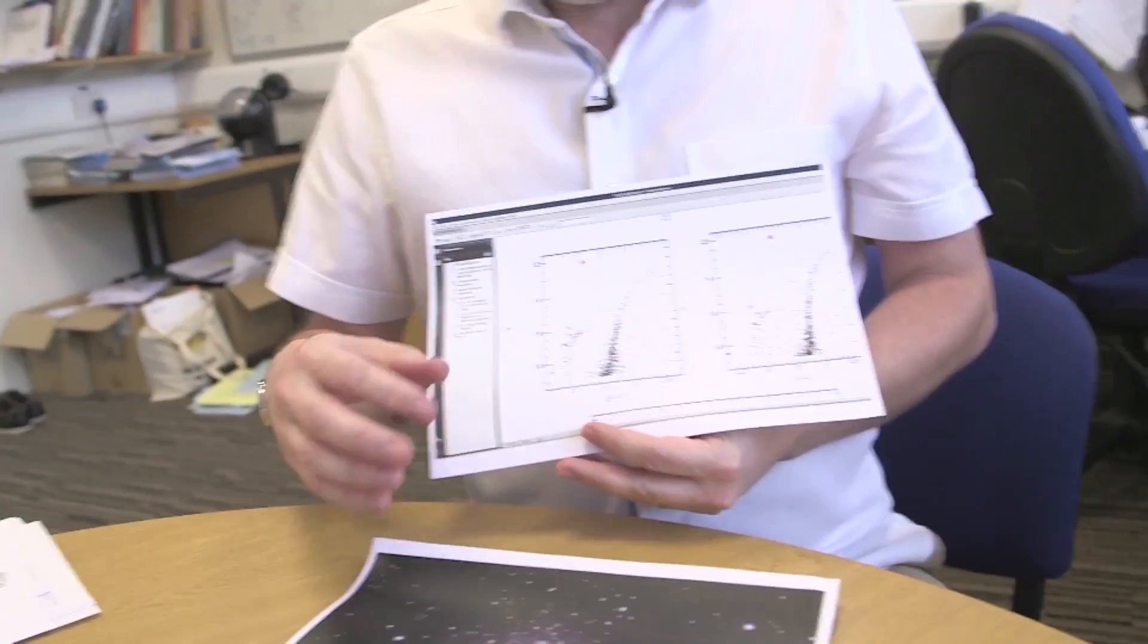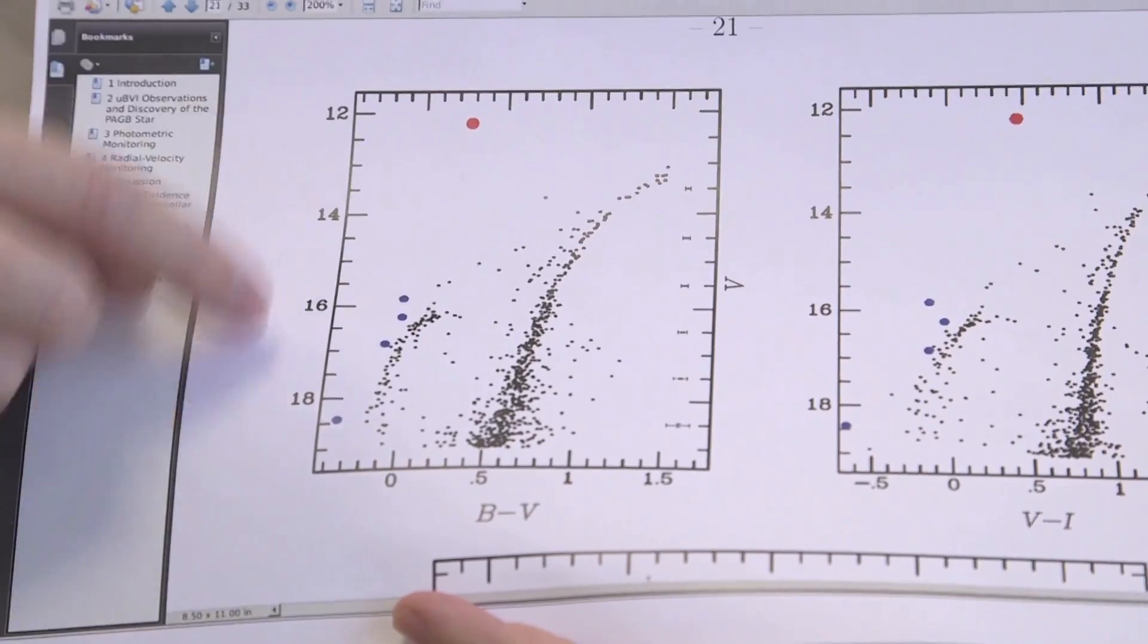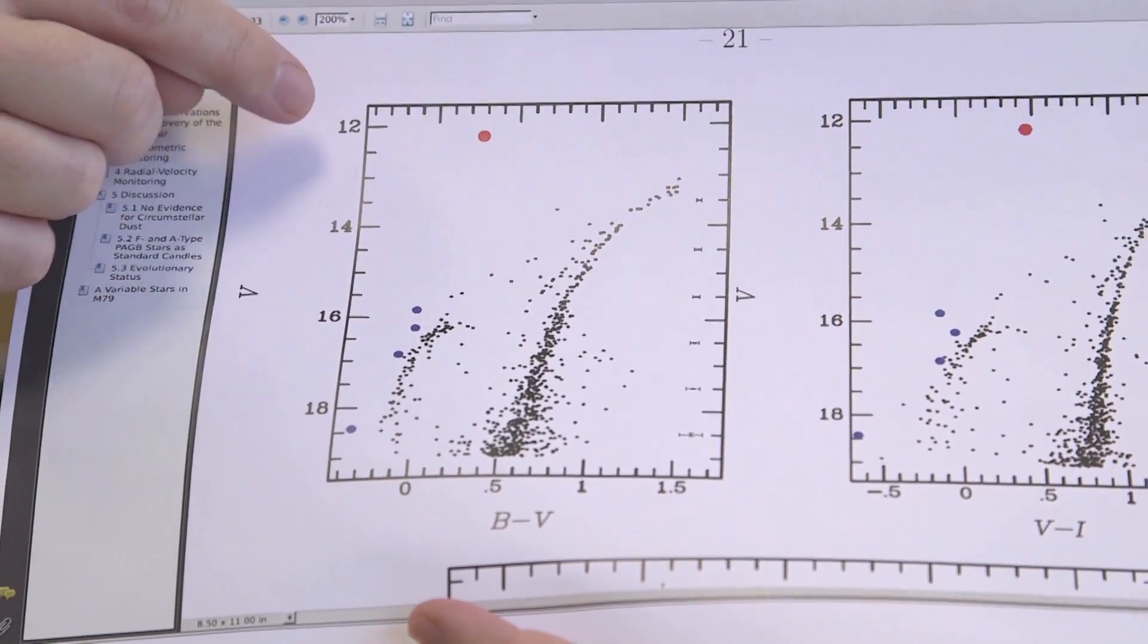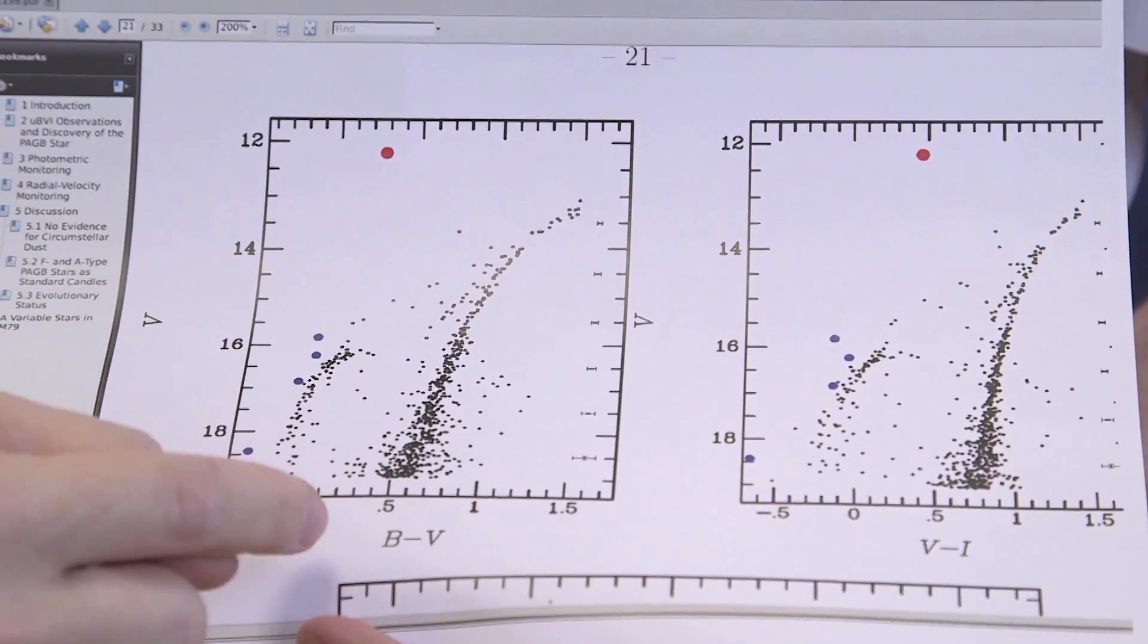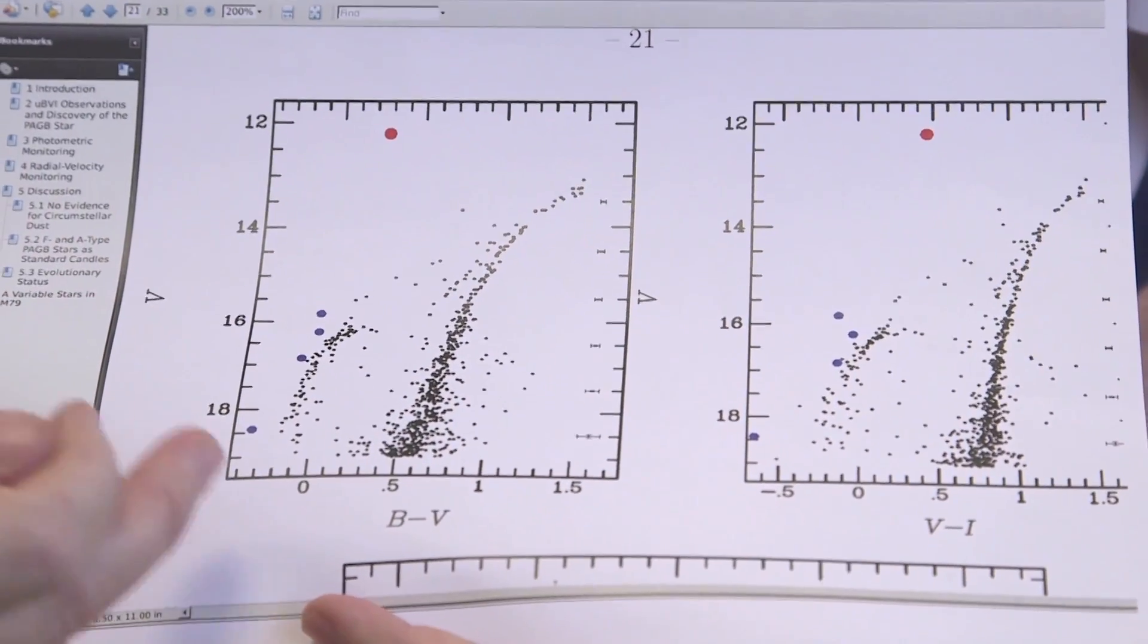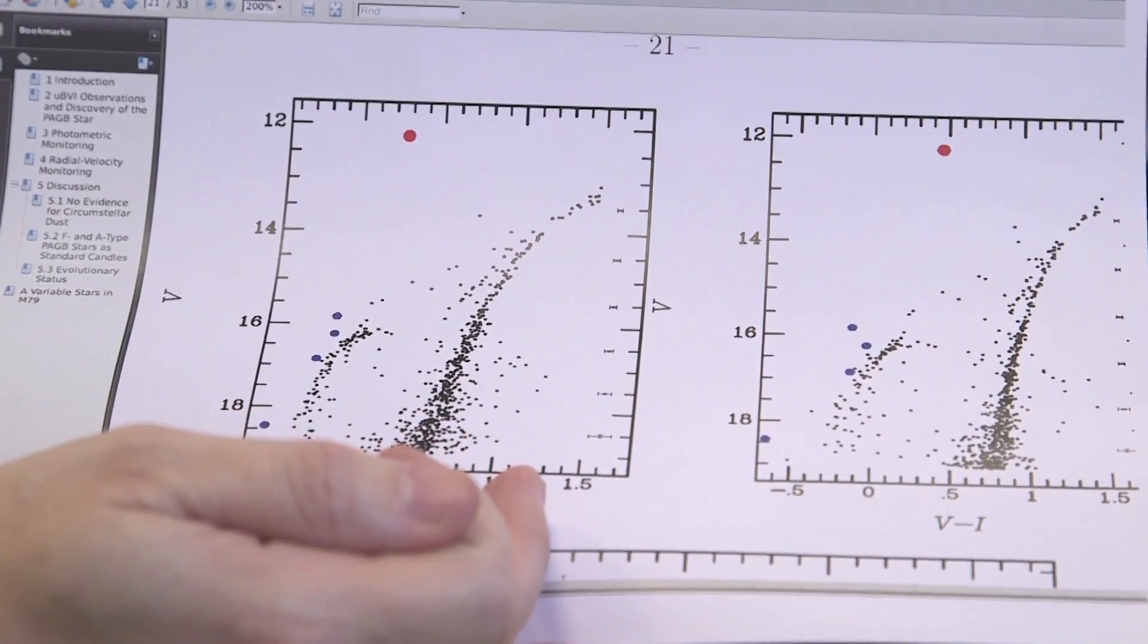But I can probably show you better by looking at this. So this is now just looking at the brightness of stars in the globular cluster M79. So the really bright things are at the top, and the fainter things are down the bottom. And on this axis, it's kind of the color information. So blue things are over here, and red things are over there.